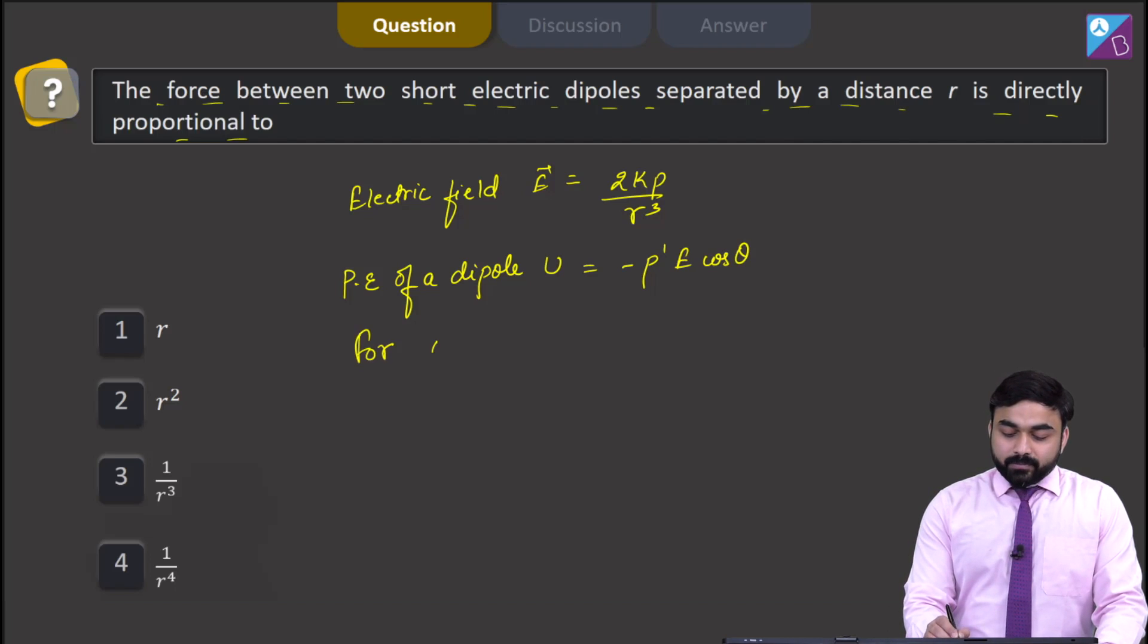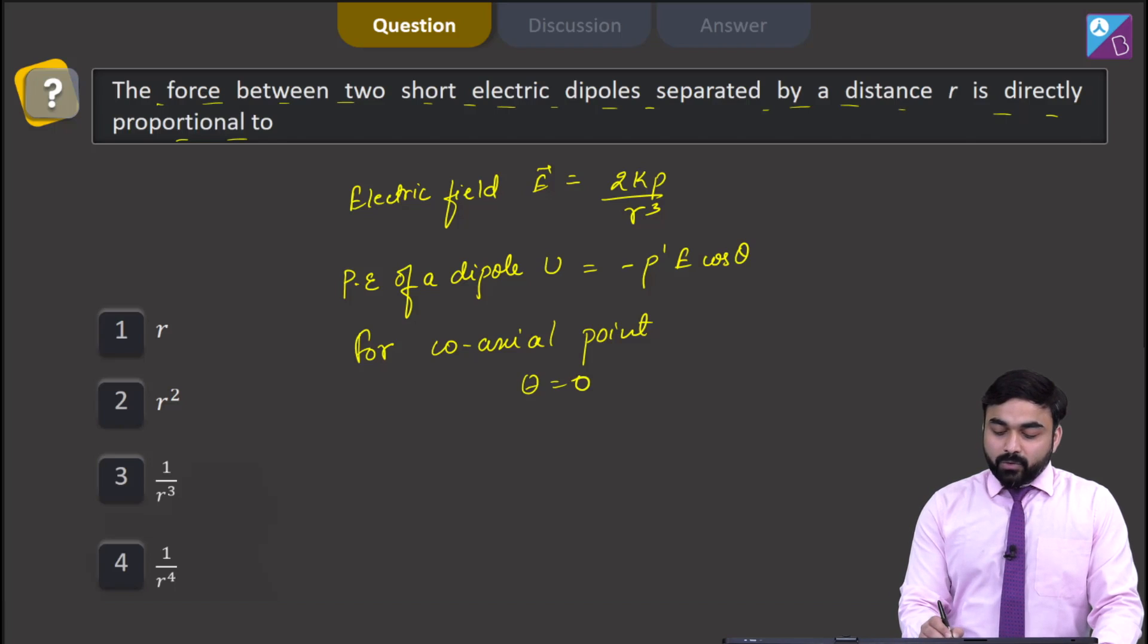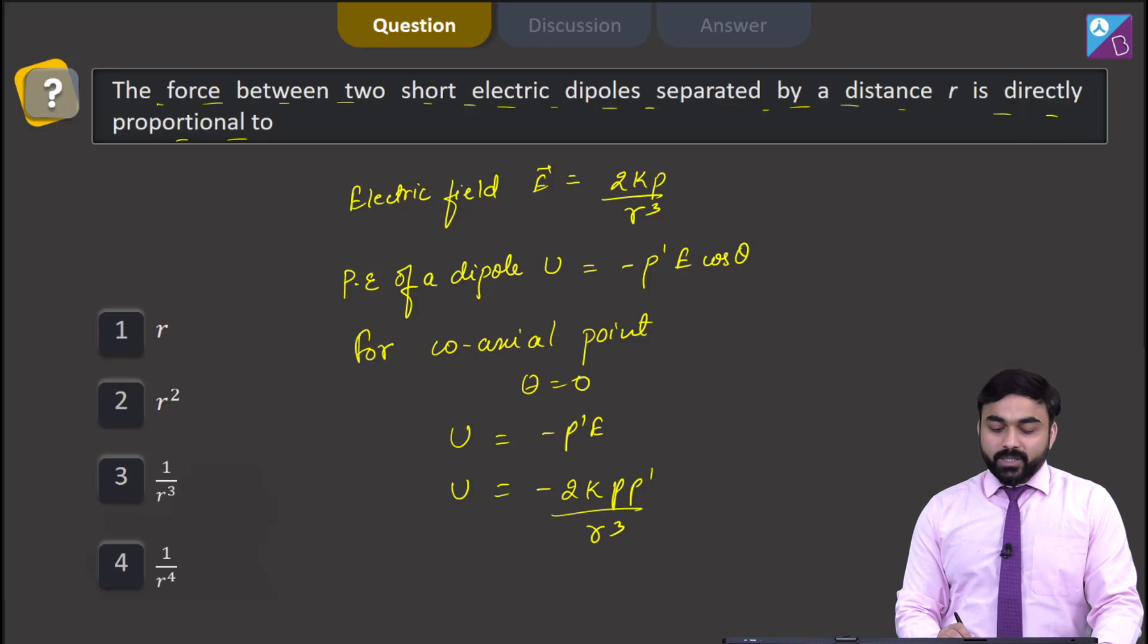For coaxial point, as they are placed on the same axis separated by a distance r, theta will be equal to 0. So potential energy will be equal to minus p dash e, and e we have already calculated, it will be equal to minus 2k p p dash over r cube.